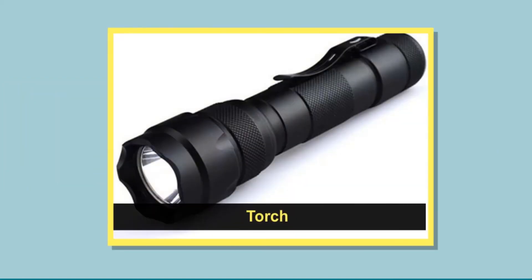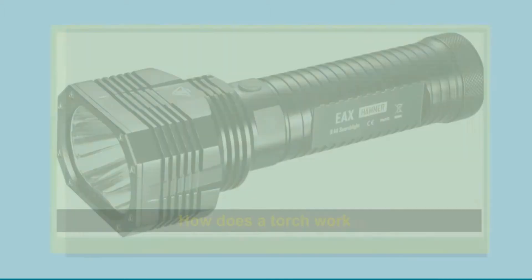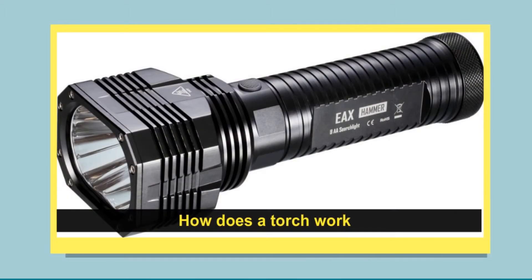Sometimes we use a torch as a source of light. A torch also runs on electricity. The electric current in a torch is produced by a device called the electric cell. How does a torch work? A torch contains a bulb and an electric cell connected to each other.